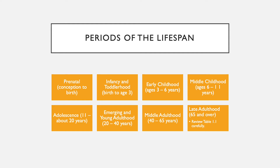The periods will be divided into eight sections for physical, cognitive, and psychosocial development. Begin your study by reviewing Table 1.1 in your text and becoming thoroughly familiar with the major developments in each stage. The eight periods are: prenatal, conception to birth; infancy and toddlerhood, birth to age 3; early childhood, ages 3 to 6; middle childhood, ages 6 to 11; adolescence, ages 11 to about 20; emerging and young adulthood, 20 to 40; middle adulthood, 40 to 65; and late adulthood, over 65 years old.